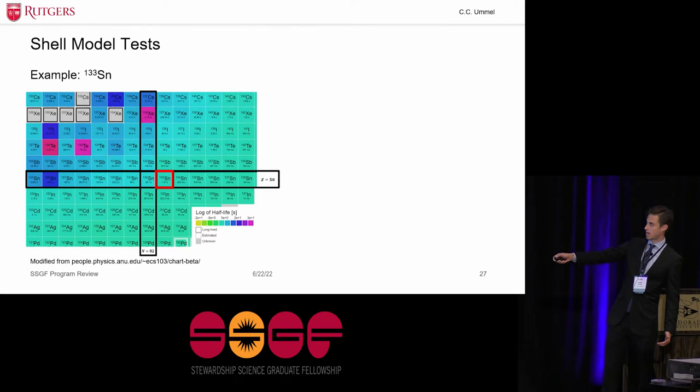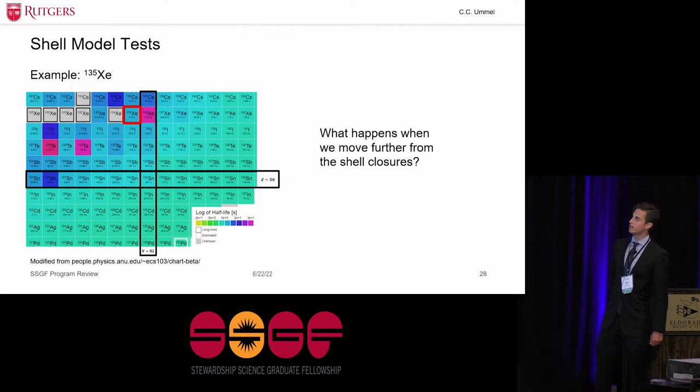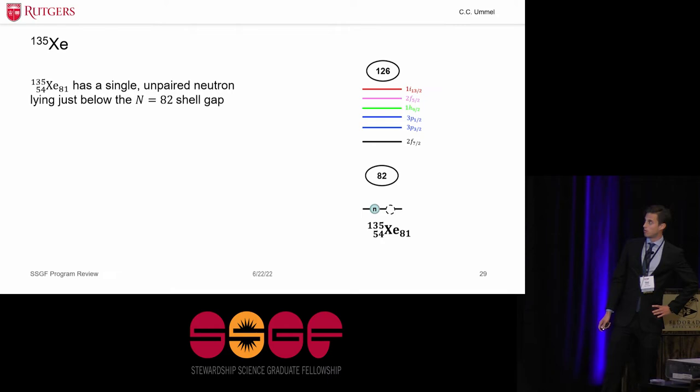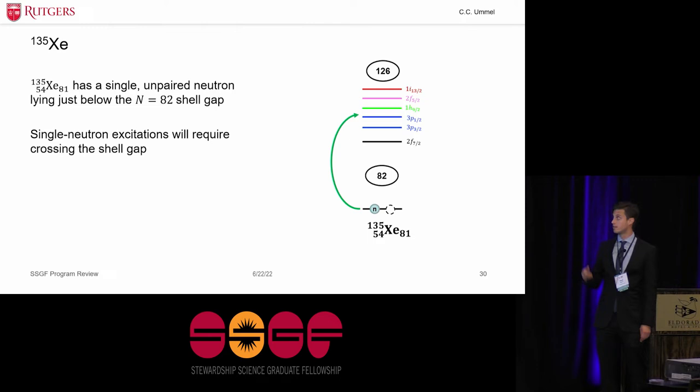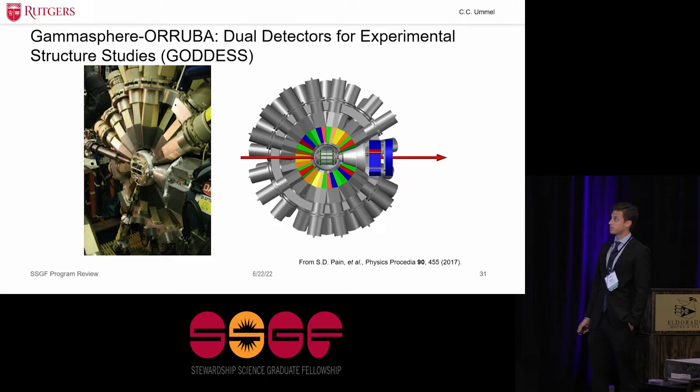So moving onward, we now have a very clean system here, just one neutron on top of a doubly magic nucleus. And we want to move a little bit further from these double shell closures and study something like xenon-135, which has four additional protons and two fewer neutrons. So what happens when we move a little bit further from these double shell closures? Well, zooming in a little bit, xenon-135, it has a single unpaired neutron lying just below that n equals 82 shell gap, as you can see here. So if we were to excite that neutron, it would have to cross the shell gap, and it would occupy, ideally, in principle, one of these single neutron orbitals here. And so it should have a very characteristic energy and spin structure defined by these orbitals, as predicted by the shell model.